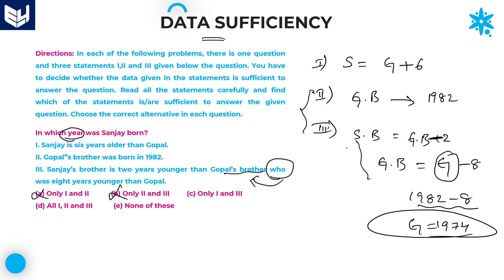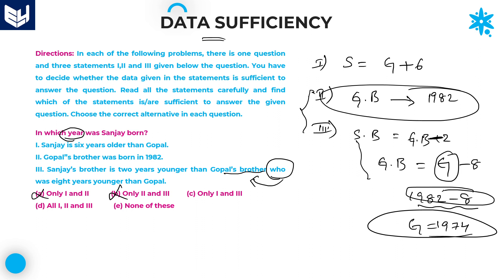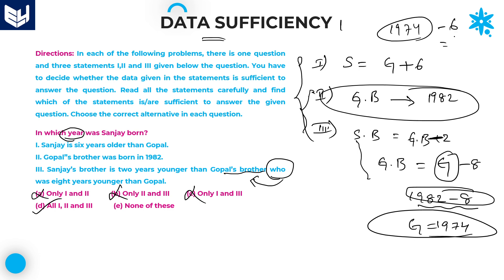Now, combining all three statements 1, 2, and 3. If Gopal's date of birth is 1974, and according to the first statement Sanjay is 6 years older than Gopal, then Sanjay was born 6 years before Gopal. That means 1974 minus 6, which equals 1968.